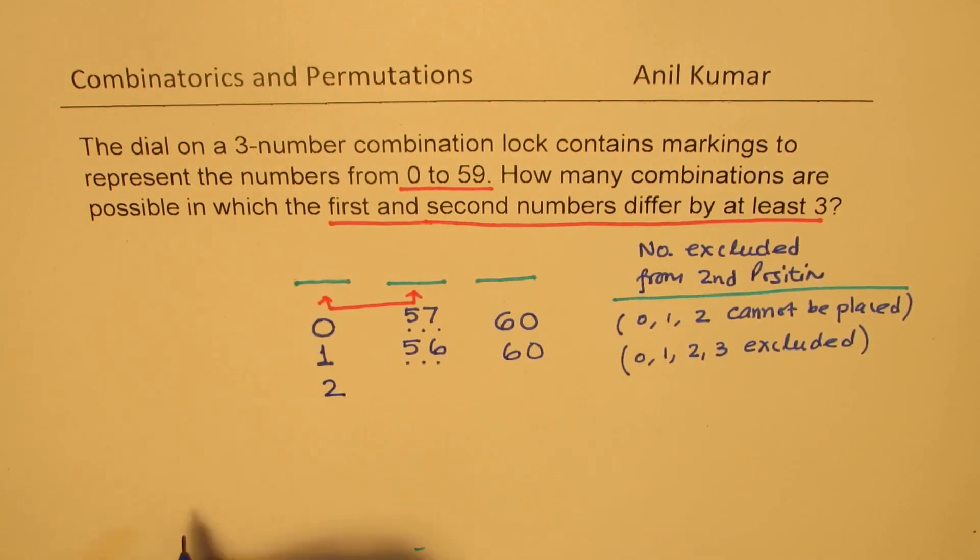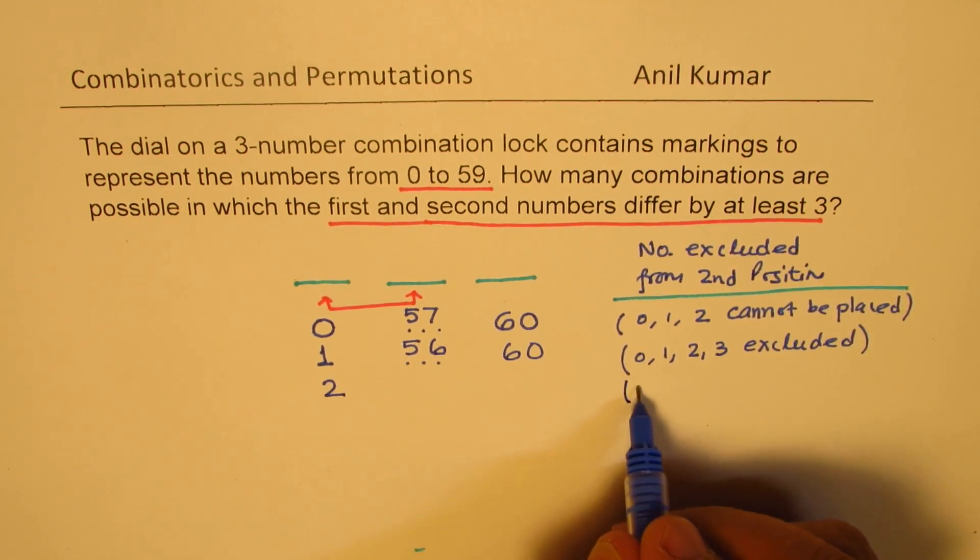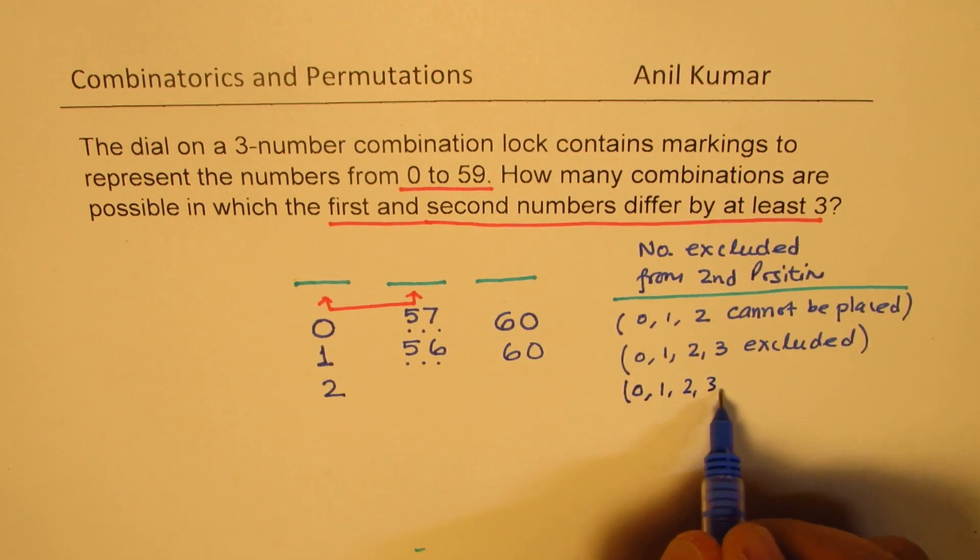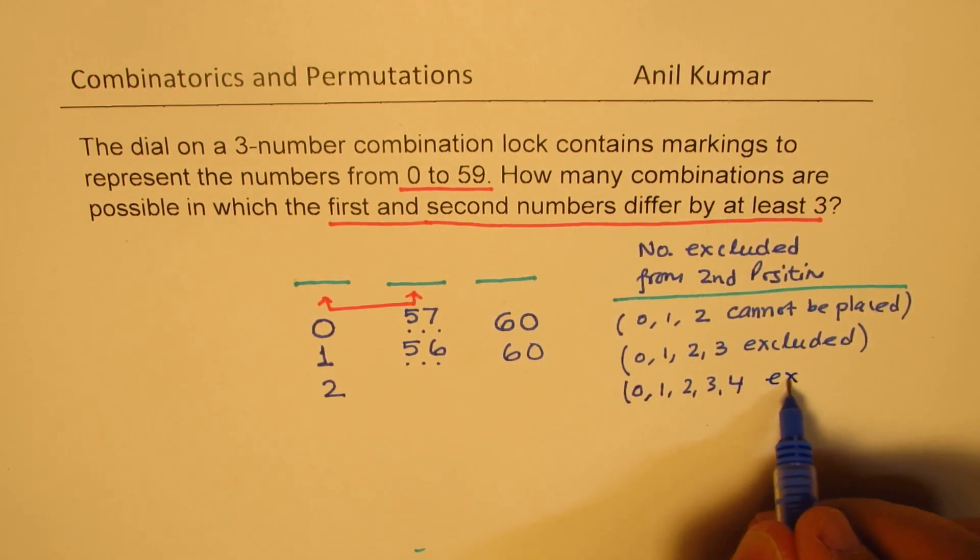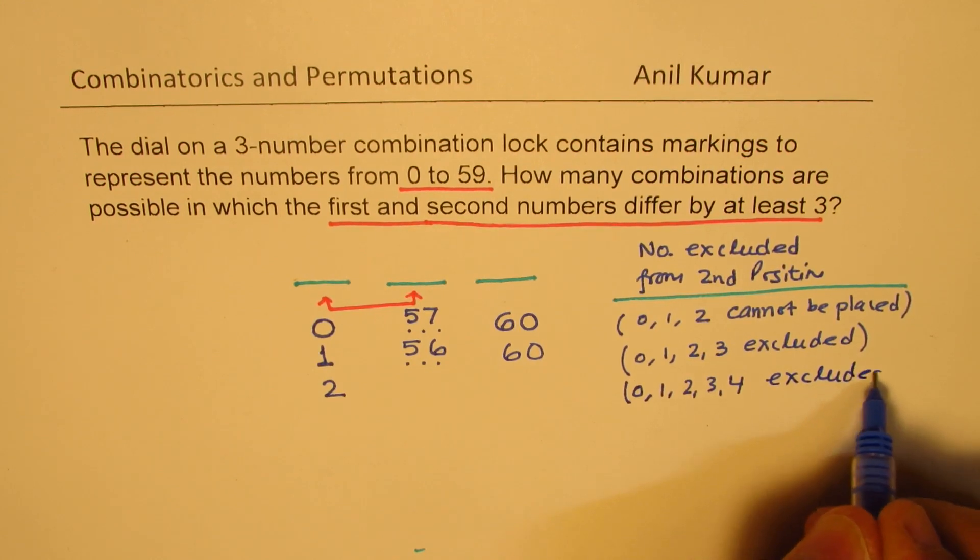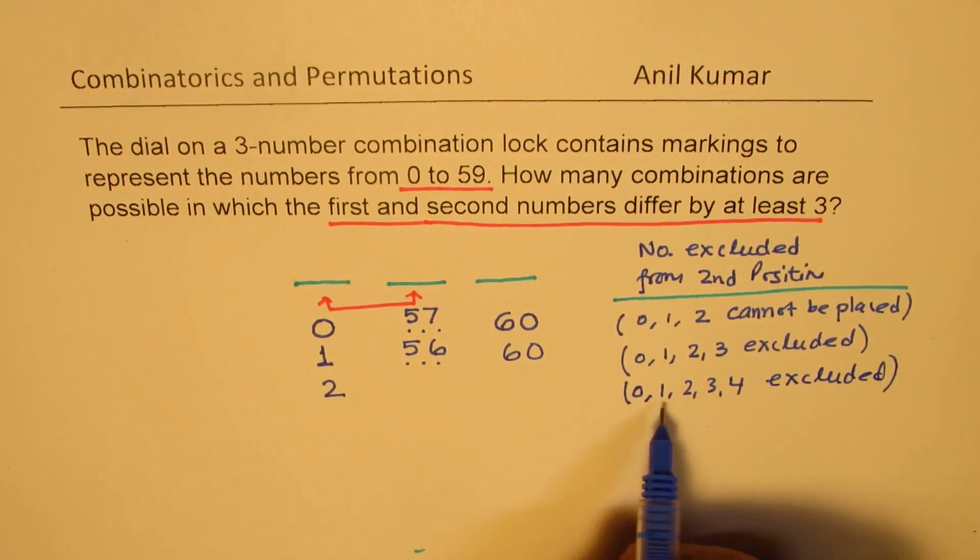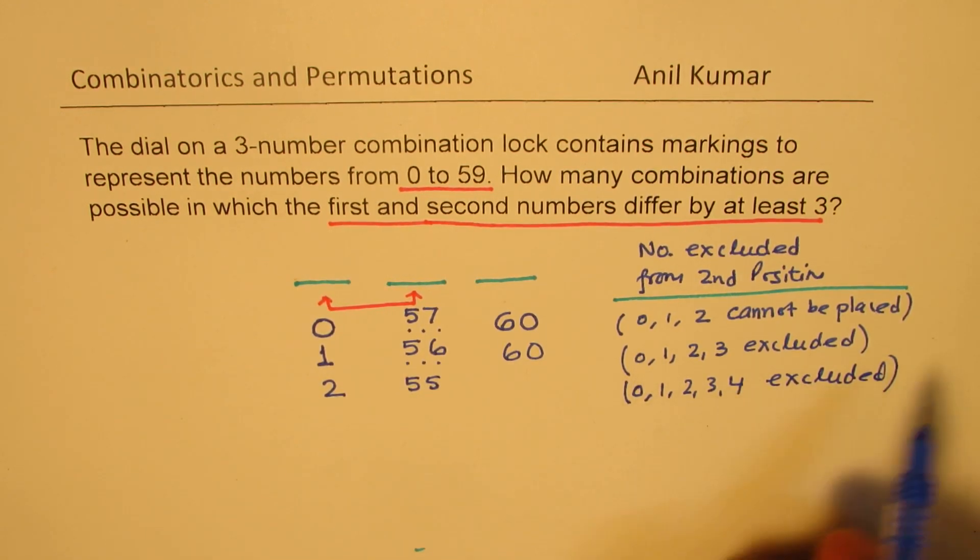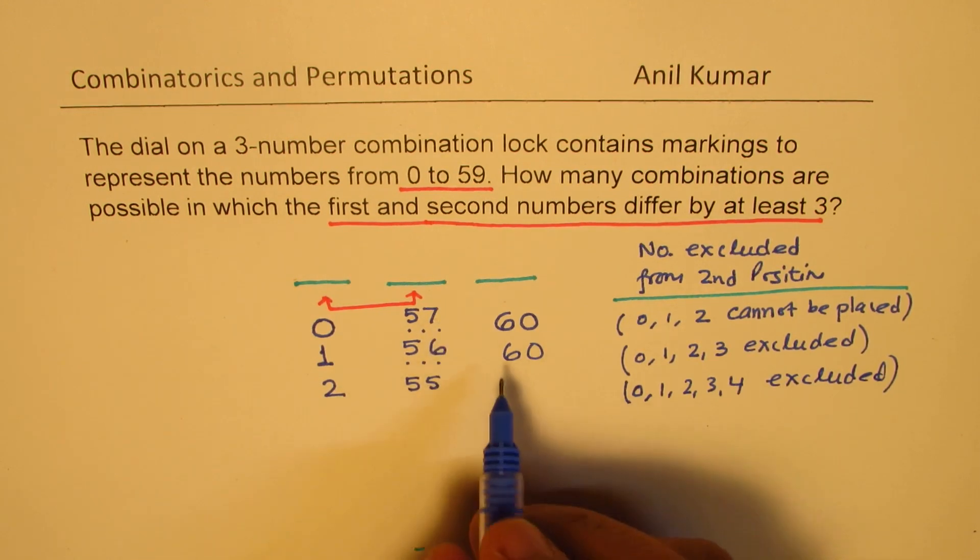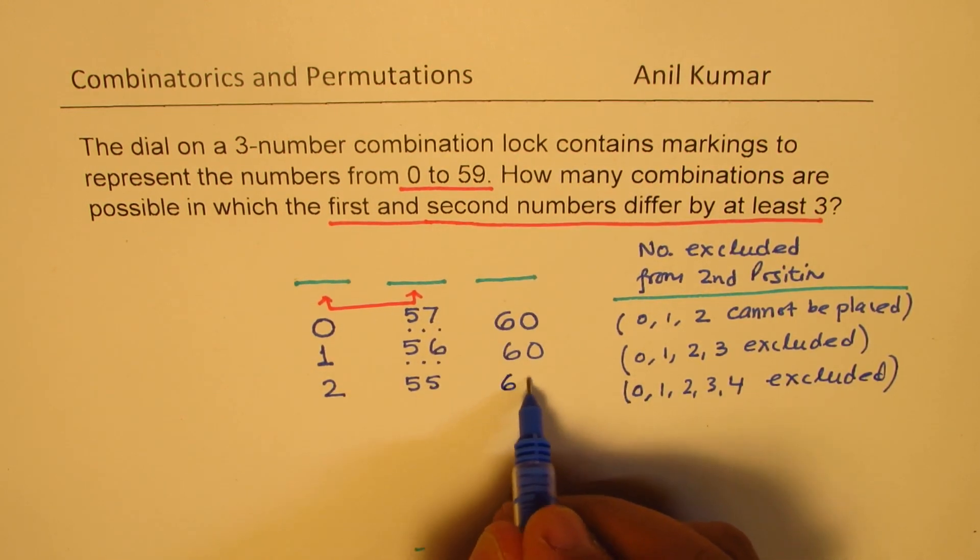Now when we start with 2, in that case, the restriction says that I cannot place 0, I cannot place 1, 2, 3, and even 4. I can place 5, so these are excluded. So the numbers excluded now are 5. So I can place only 55 numbers here, which are from 5 to 59. And in the third position, there is no restriction.